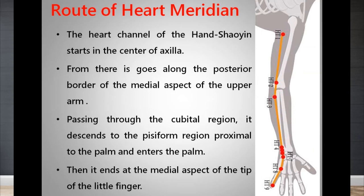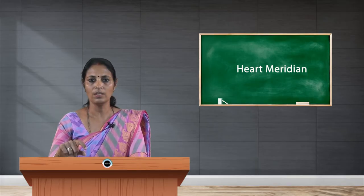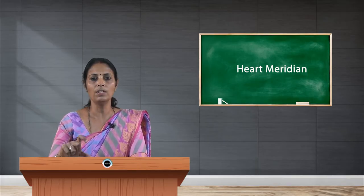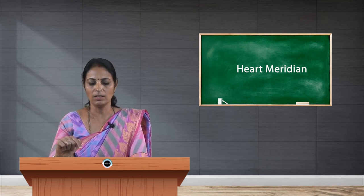The superficial branch starts from the center of the axilla and descends downward along the medial aspect of the upper arm, then the anterior medial aspect of the forearm, and ends at the lateral aspect of the little finger at the corner of the nail. This is the pathway of the heart meridian.